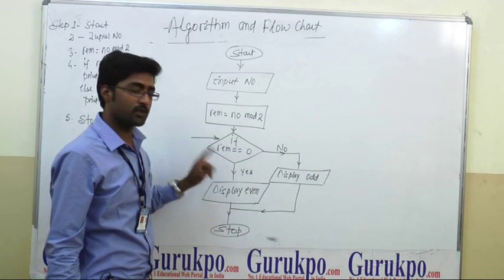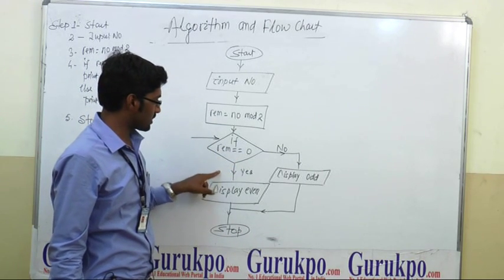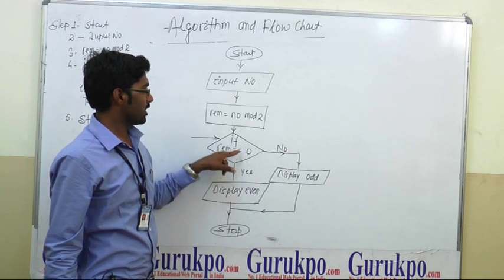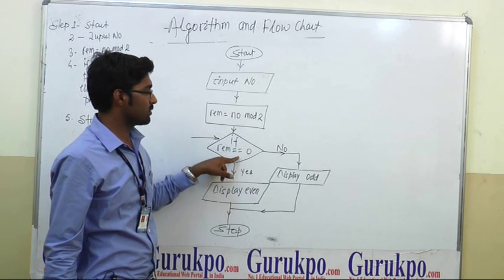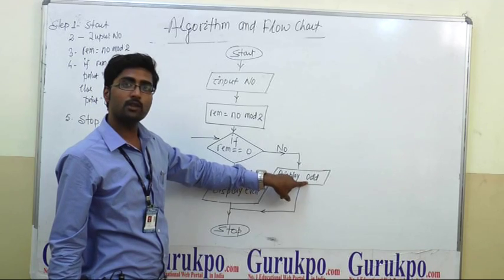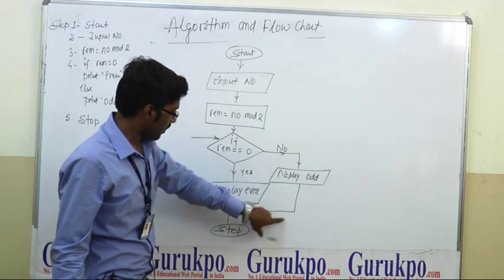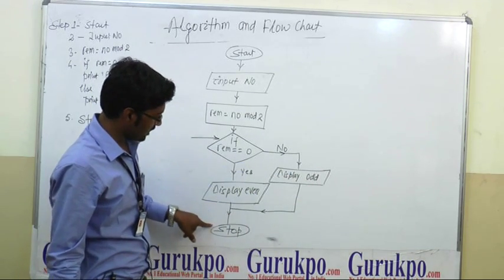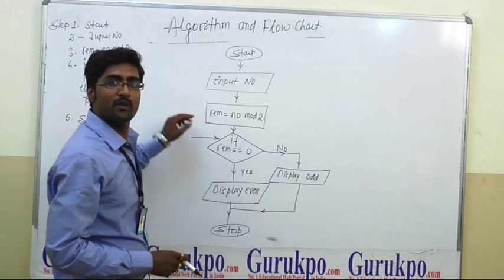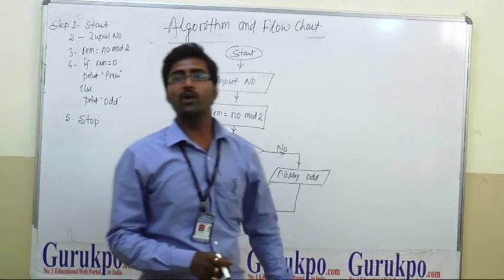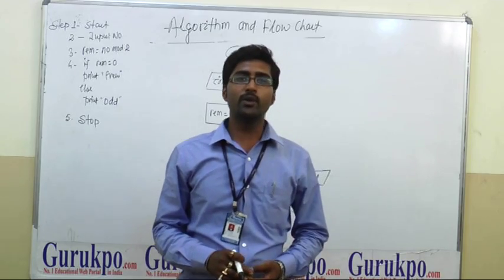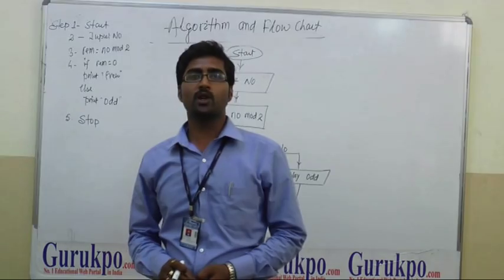If the condition is satisfied — yes — then display 'it is even number.' If the remainder is not equal to zero, then display 'number is odd.' And the whole program is stopped. Thank you. For more details, please log on to www.GuruKPO.com.